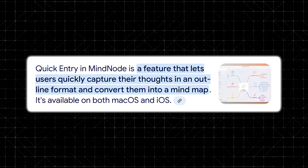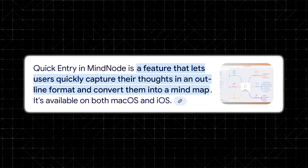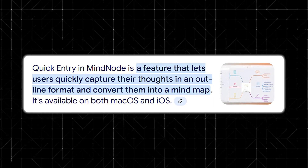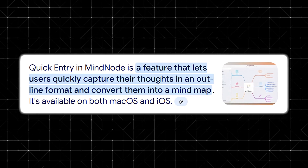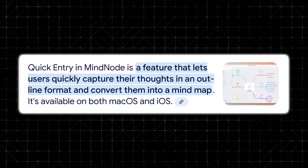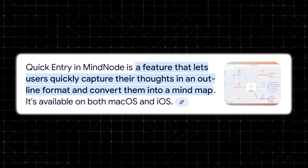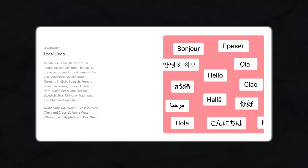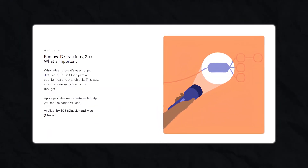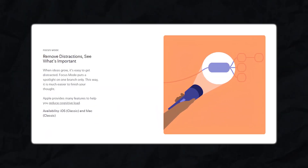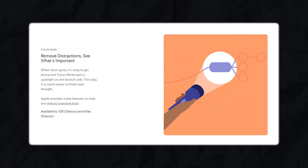The quick entry feature deserves a special mention. Whether you're on Mac or iPhone, you can start a new mind map in seconds — just jot down your ideas and the app takes care of organizing them into nodes. Accessibility is another area where MindNode excels. The app supports larger fonts, multiple languages, and focus modes, ensuring it's usable by everyone regardless of their needs or preferences.